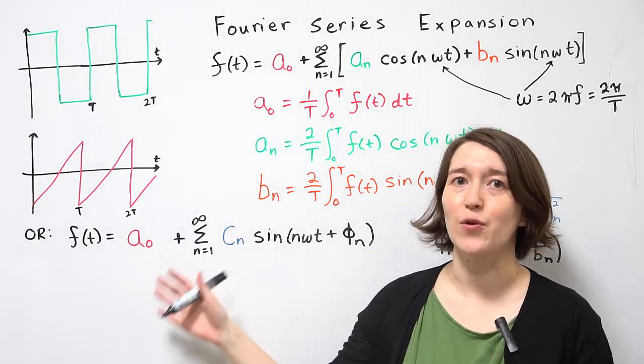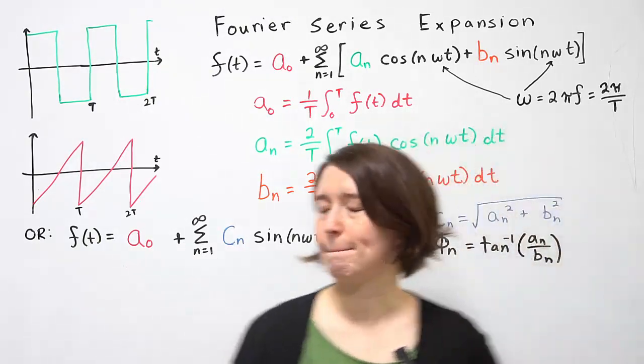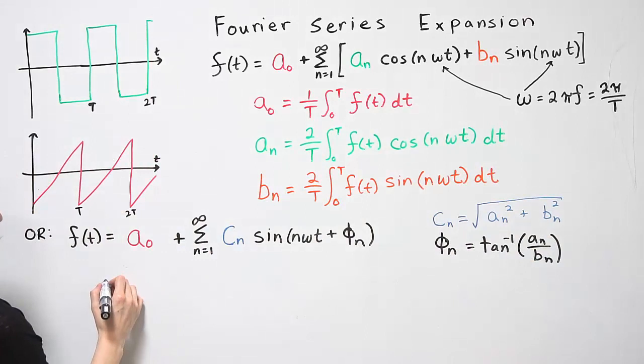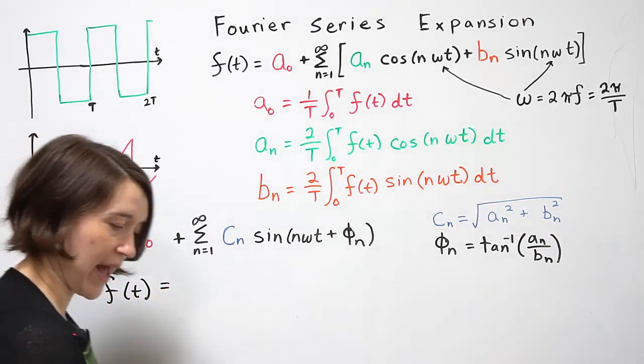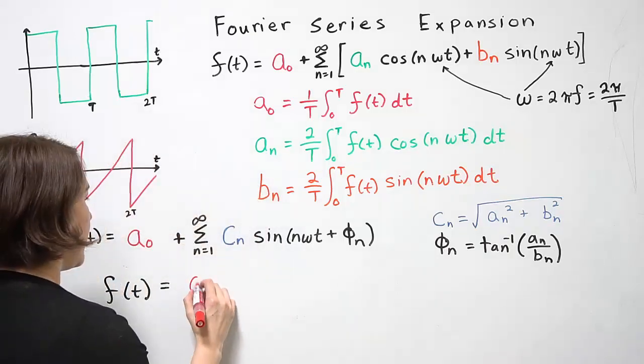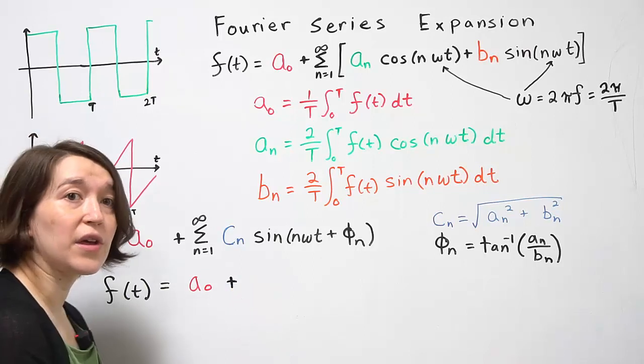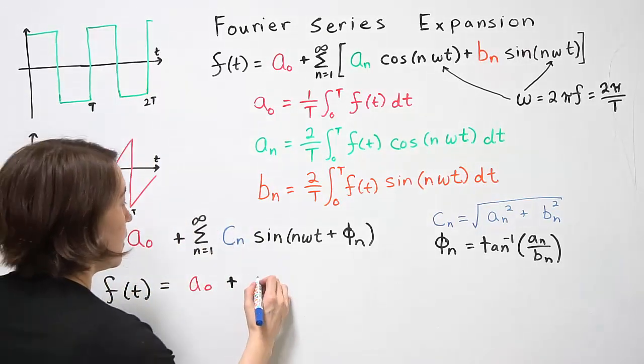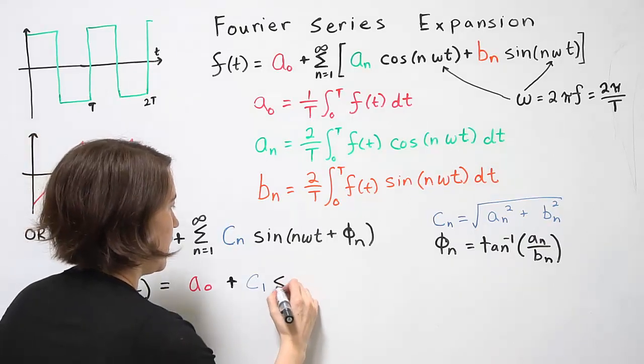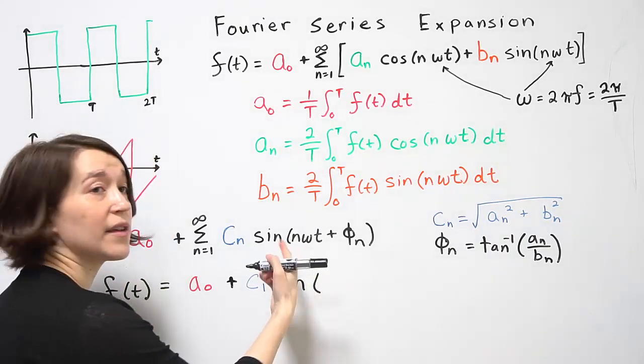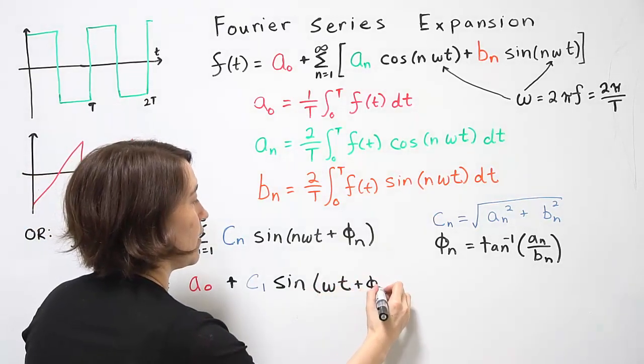We'll be using this form of the Fourier series expansion. So let's actually write out the first couple terms and talk about what they mean. So we can rewrite our periodic waveform as a₀ plus, let's evaluate at n equals 1. So c₁ sine of, n is equal to 1, so that can just not be written, ωt plus φₙ,